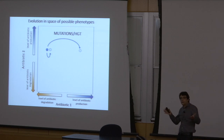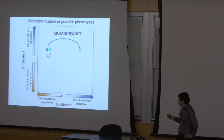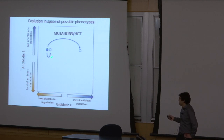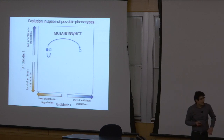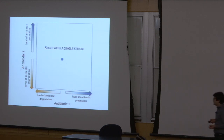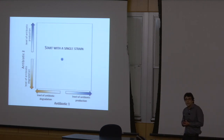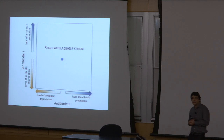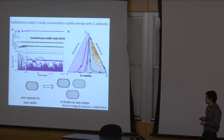We also added evolution: bacteria can freely evolve their investment in antibiotic degradation and antibiotic production. Mutations can decrease antibiotic degradation or suddenly give a bacterium the ability to produce an antibiotic. We then started with a single strain, added these mutations, followed the ecological dynamics, and simulated over tens of thousands of generations to see how diversity would emerge.